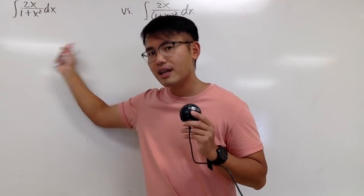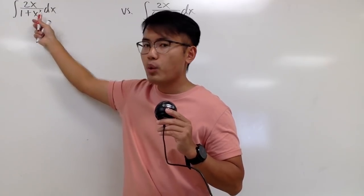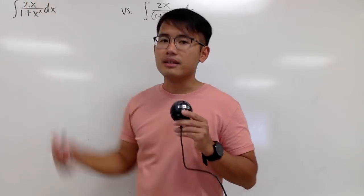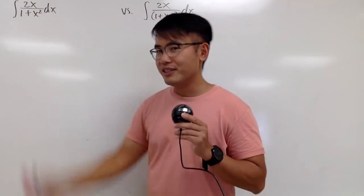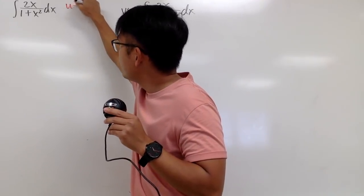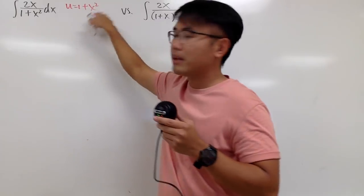this one right here is easier because I notice the denominator 1 plus x squared. If I differentiate that, I get 2x, and I do have the 2x on the top. So I can finish this by doing a u sub. So let me write this down. I will say u equals just the denominator,